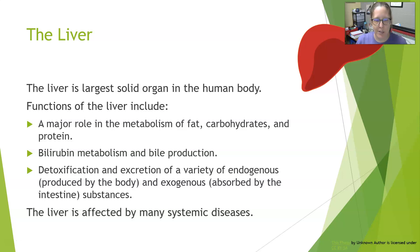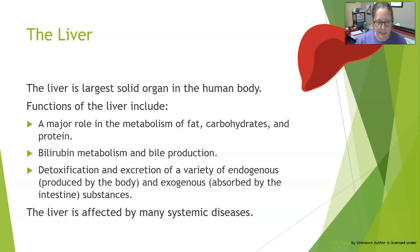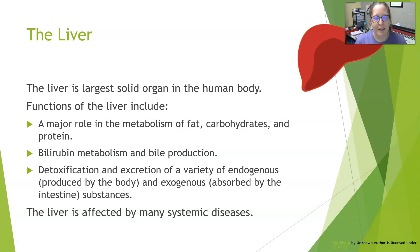The liver has a big role in detoxification and excretion of a variety of endogenous — meaning produced by the body — and exogenous — meaning absorbed by the intestines — substances. So it's a big factory, a big processing plant. That's basically what the liver is, and it can be affected by many systemic diseases.